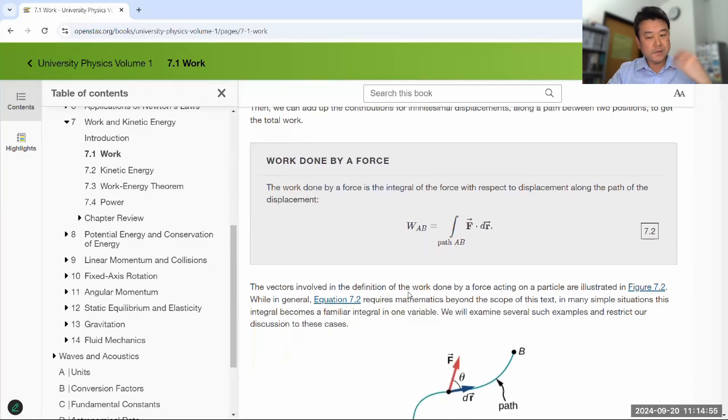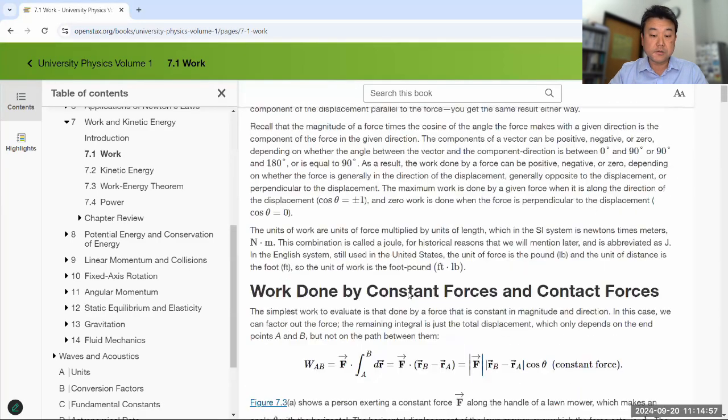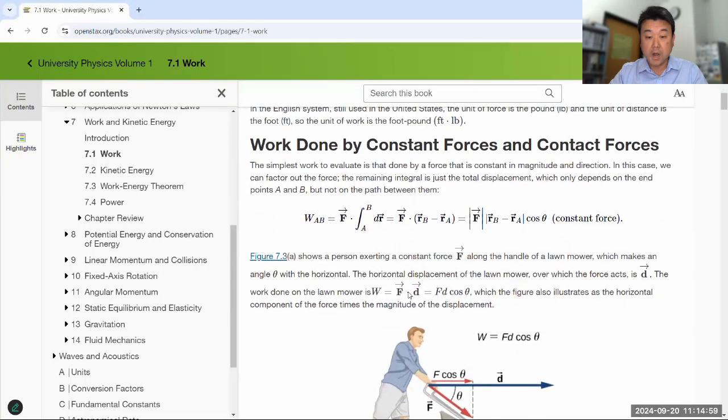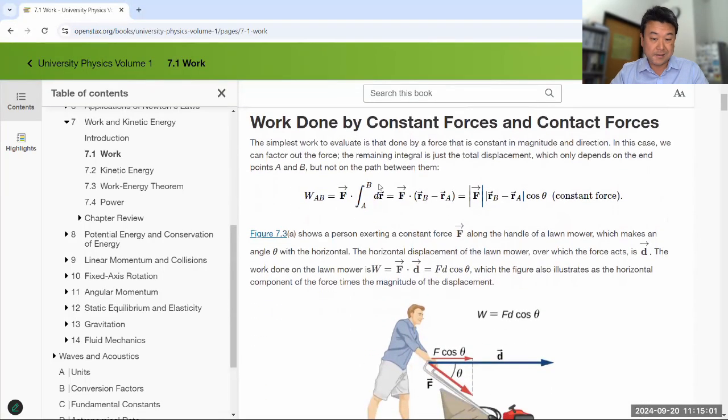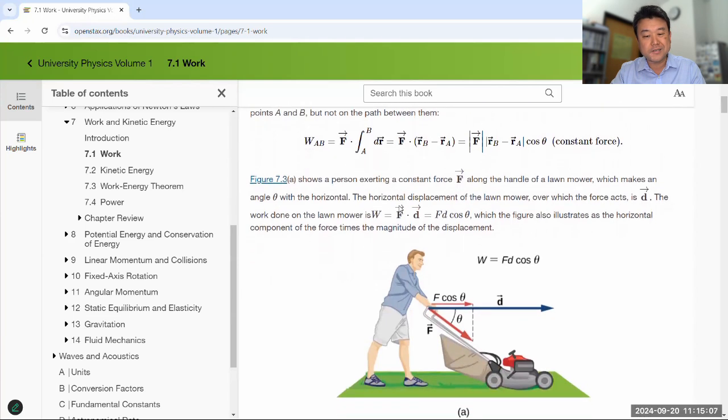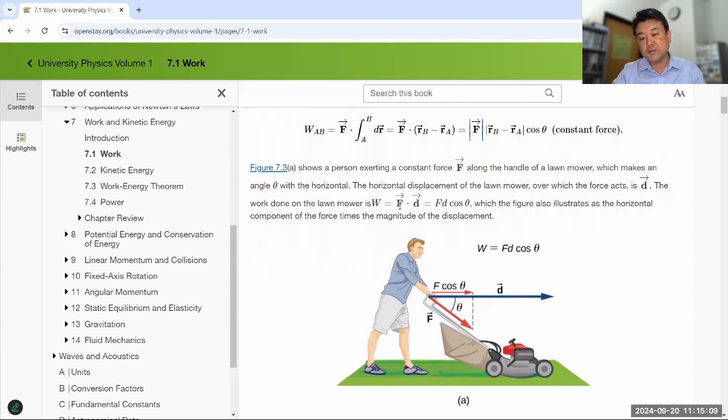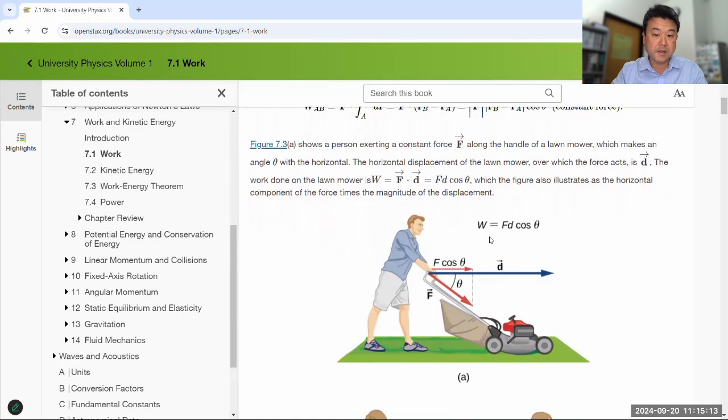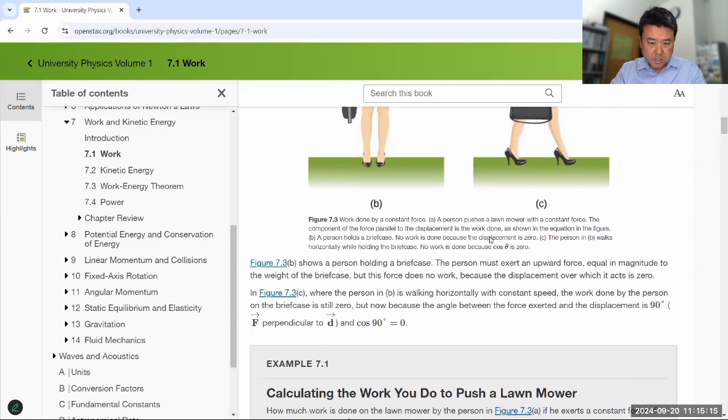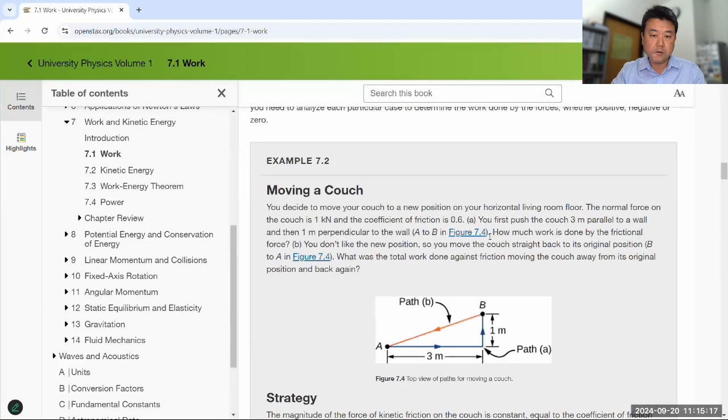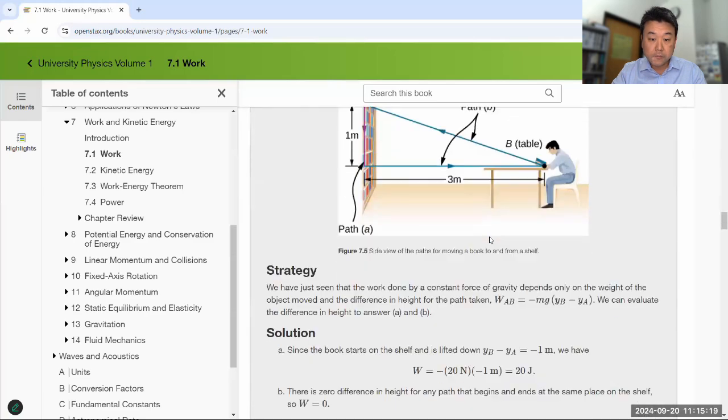So section 7.1 defines work, gives you some examples of calculating work with constant force. Like an example like this, constant force, straight path, that's the kind of example you would see. Really the complication that you would deal with is the cosine of the angle, that's part of the definition of that product. And this section also talks about the work done by a variable force.